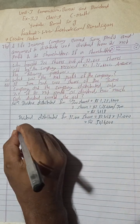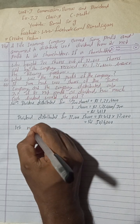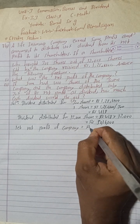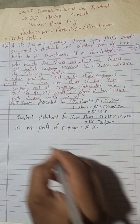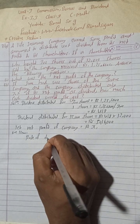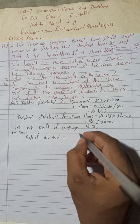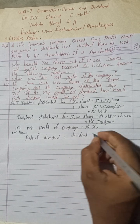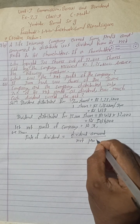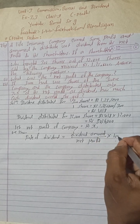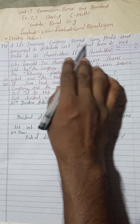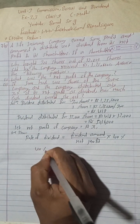Now for question number 1, let the net profit of the company equal Rs x. We use the formula: rate of dividend = (dividend amount ÷ net profit) × 100%. The rate of dividend is given as 40%, and the dividend amount we found is Rs 50,16,000. So: 40 = (50,16,000 ÷ x) × 100.